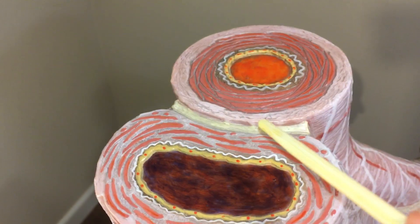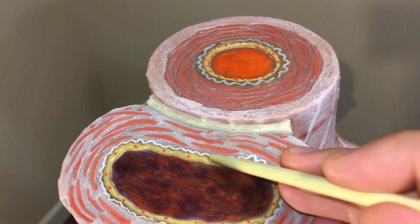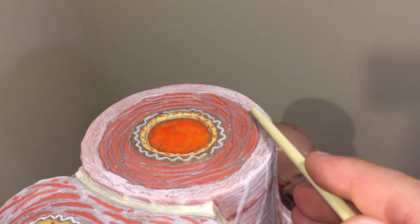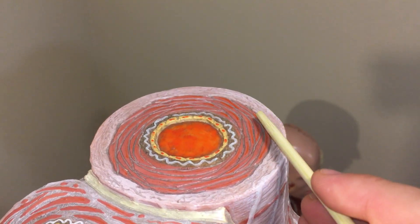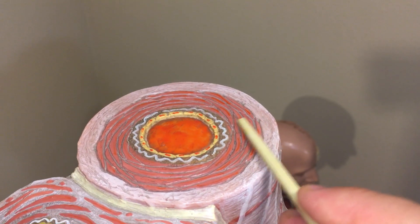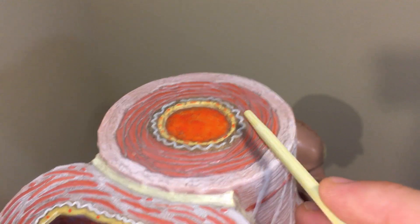And then here we have the vein. And remember that again, this is a muscular artery, not an elastic artery where the elastic fibers will be all within the tunica media for an elastic artery.